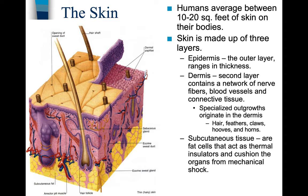A second degree burn goes into the dermis, causes blistering, and takes longer to heal — it could become infected. If someone burns themselves with a blowtorch, it might burn through the first two layers of skin — that would be a third degree burn, going all the way down to the subcutaneous tissue. Subcutaneous tissue consists of fat cells that act as thermal insulators and cushion organs from mechanical shock. Normally, a third degree burn scars because the first two layers have been destroyed and the best repair the skin can do is create scar tissue, which is inflexible, unlike normal skin.